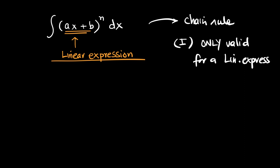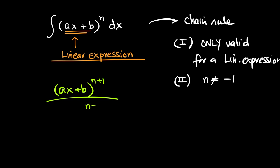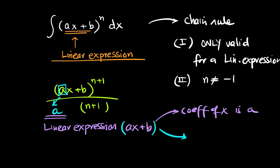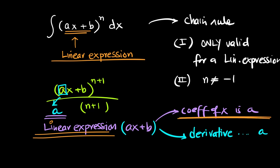The second thing is, as usual, it is valid for all powers except n should not equal negative 1. The procedure: increase the power by 1, divide by the new power, and don't forget to divide by the coefficient of x — which is the same as the derivative of the bracket. For a linear expression ax + b, the coefficient of x is a, and the derivative of the bracket is also a, because the derivative of a constant is 0.